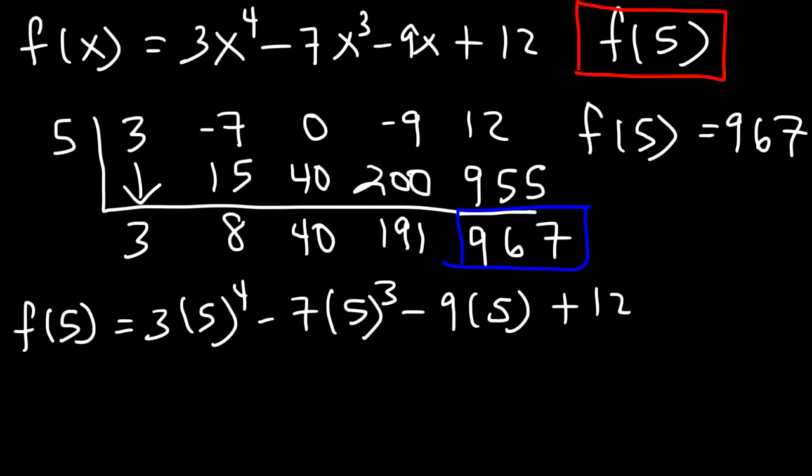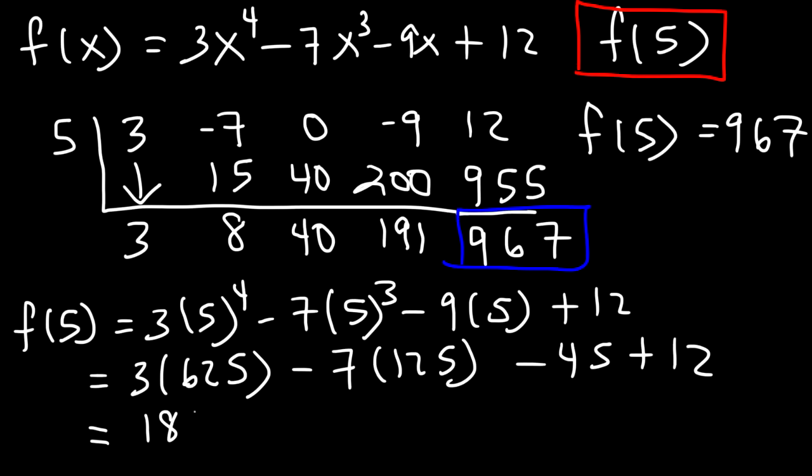So this is going to be 3 times 5 to the 4th minus 7 times 5 to the 3rd minus 9 times 5 plus 12. So what's 5 to the 4th power? 5 times 5 is 25. 25 times 5 is 125. And 125 times 5, that's 625. So 5 times 100 is 500, and 5 times 25 is 125. So you need to add 500 and 125 to get 625. Now we know that 5 cubed is 125. And 9 times 5 is 45. Now, 3 times 625. 3 times 600 is 1800. And 3 times 25 is 75. So that's going to be 1875.